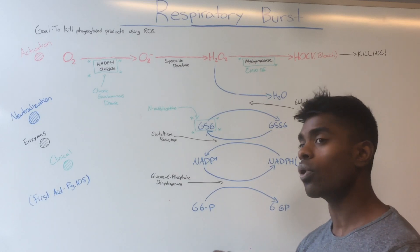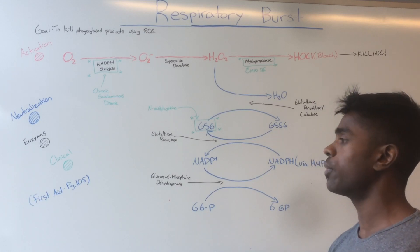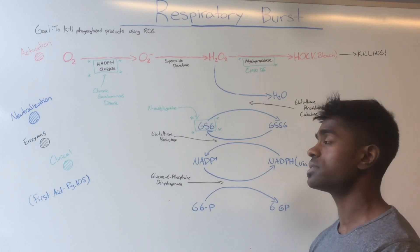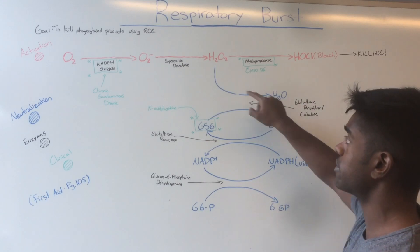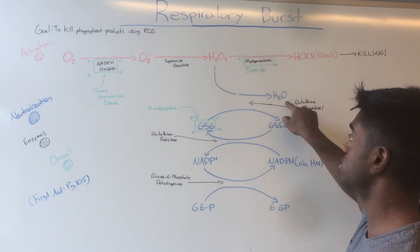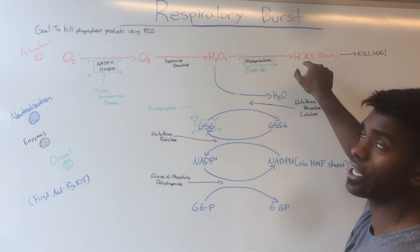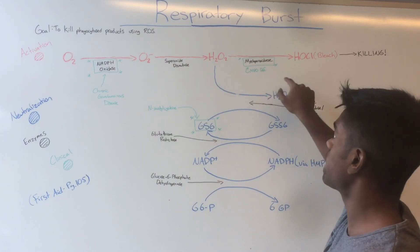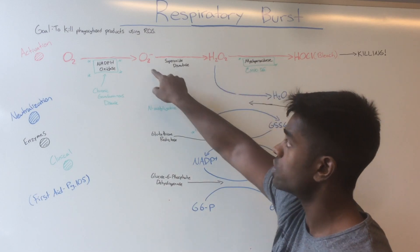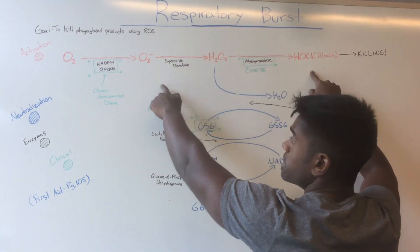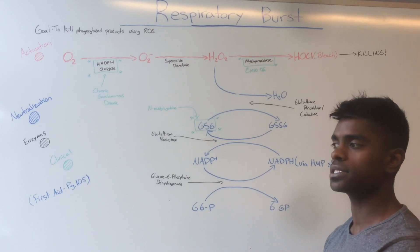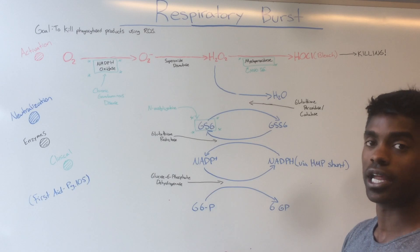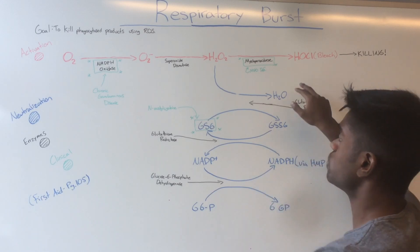This causes the most problems for catalase-positive organisms, which have the enzyme catalase. When organisms have this enzyme, they're always converting H2O2 into H2O, so HOCl will never be formed. If you don't have HOCl or O2-, which are the two free radicals produced in this pathway, you have no way of killing these phagocytosed products because you cannot create any of these free radicals.